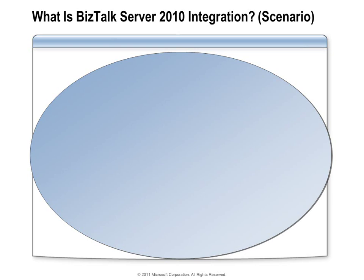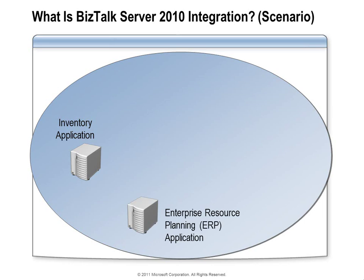Let's take a look at a common enterprise integration scenario and see how BizTalk Server can address those challenges. In this scenario, we have an inventory application running on a mainframe. This system checks stock periodically to see if any items have fallen below acceptable inventory levels. When it finds that's the case, it needs to submit a request that the item be placed on order. In our scenario, all purchasing is handled by an ERP system. Options might include an adapter between the mainframe and ERP system, sending a file via FTP, or using a message queuing infrastructure.